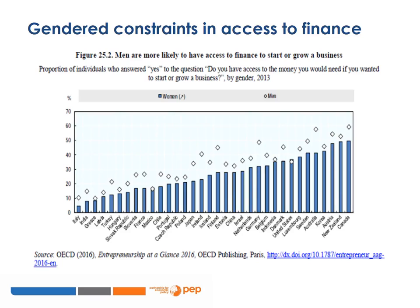Data on gender gaps in access to financial resources tend to be sparser and more difficult to document, particularly in low-income economies. This figure from an OECD report on entrepreneurship shows the proportion of individuals who answered yes to the question of whether they had the money needed to start or grow a business. The blue bars represent women and the diamond signs represent men. It shows that a smaller number of women than men responded yes, invariably and across countries as diverse as Turkey and Australia.